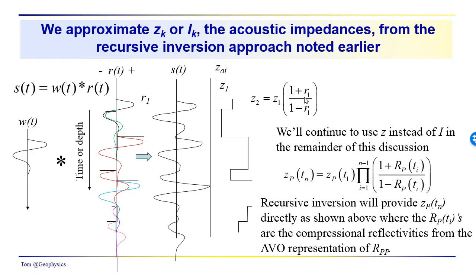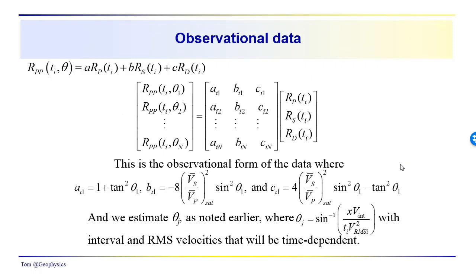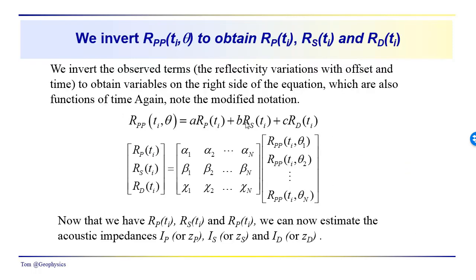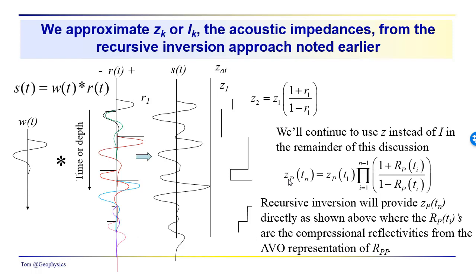We're going to continue using z instead of i, and we'll also shift over to the use of the capitalized R sub p, just being consistent with the terms in this equation. So we have z sub p at time n would be equal to z sub p at time t1 times the product of all these 1 plus r sub p at time t sub i, where i is running from 1 to n minus 1 over 1 minus r sub p t sub i.